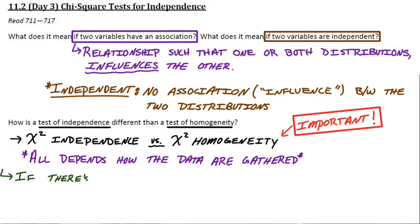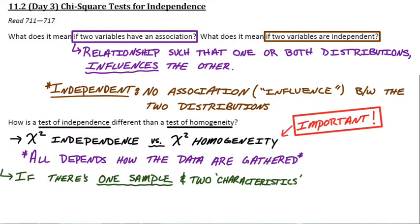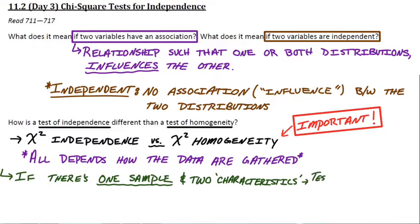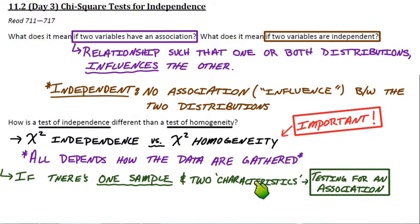Here's the distinction in terms of how the data are gathered. If there's only one sample — one big sample taken — and we're looking at two different characteristics within that sample, maybe eye color and intelligence for example, then we're testing for an association. We're trying to see if those two characteristics are independent of each other within this one overall sample. That would be the independence test.